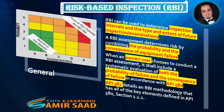Risk-Based Inspection — RBI General. RBI can be used to determine inspection intervals and the type and extent of future inspection examinations. RBI assessment determines risk by combining the probability and the consequence of equipment failure. When an owner-user chooses to conduct an RBI assessment, it shall include a systematic evaluation of both the probability of failure and the consequence of failure in accordance with API 580. API 581 details an RBI methodology that has all of the key elements defined in API 580 Section 1.1.1.